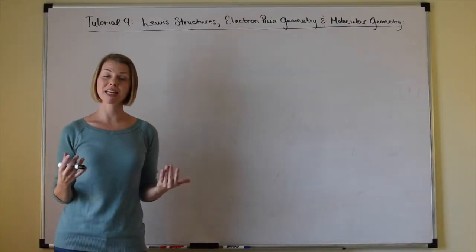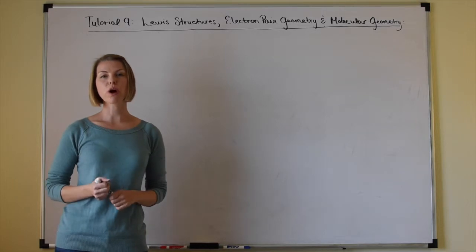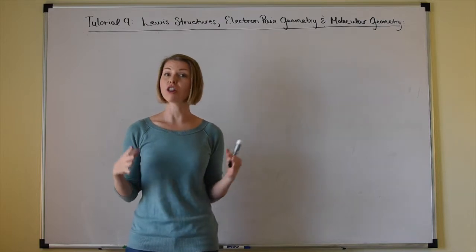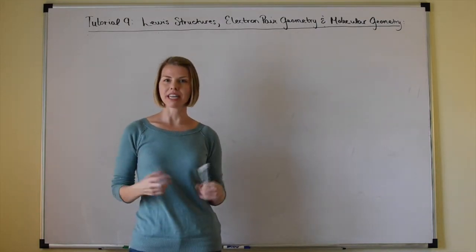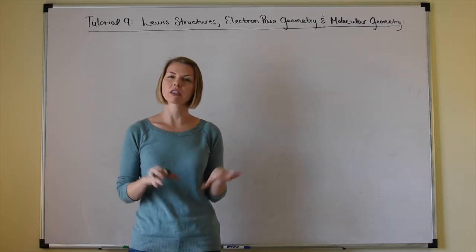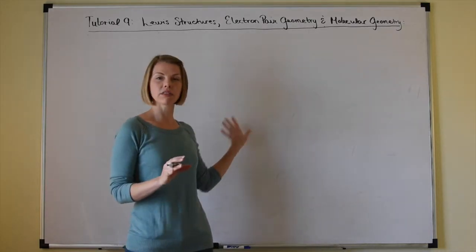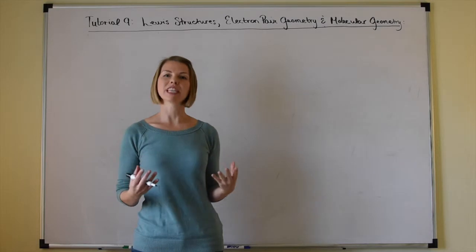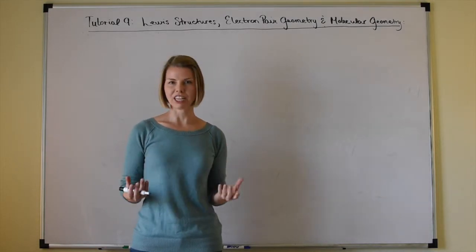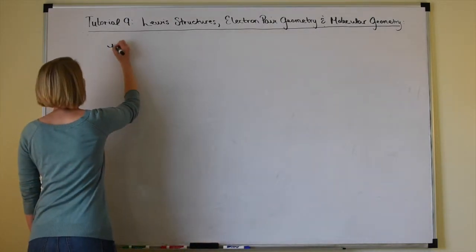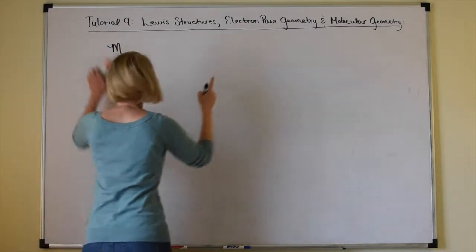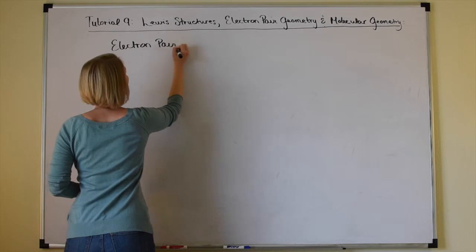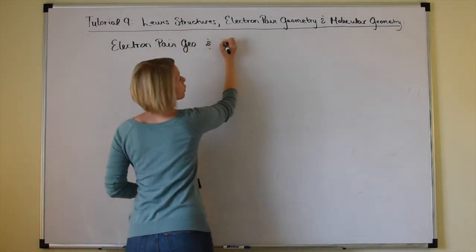Once you have mastered drawing Lewis structures, you're ready to analyze the three-dimensional shape — what we call the molecular geometry of a molecular compound. Lewis structures are still just in two dimensions drawn on flat paper or a whiteboard. But molecules are three-dimensional, and we represent their three-dimensional shapes by naming them electron pair geometry and molecular geometry.